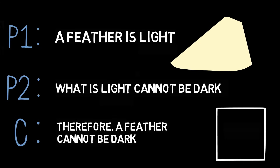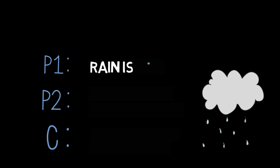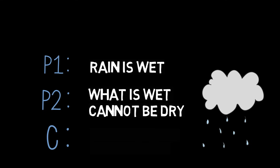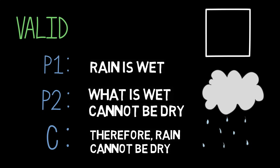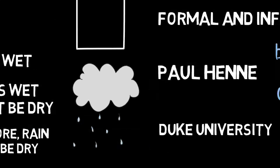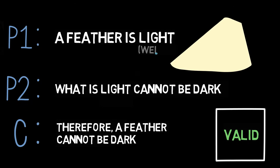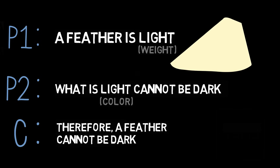The form may at first glance seem valid, that is, if we ignored the meaning of the content. Consider that we can use a seemingly similar argument form to make a valid argument. For instance — premise one: rain is wet. Premise two: what's wet cannot be dry. Conclusion: therefore, rain cannot be dry. Here we have a valid argument that seems to have a similar form as the fallacious one, but lacks defects in its content. But the content of our fallacious argument, given the two meanings of 'light' — lightweight and light color — yields problems. If we understand the meaning of the terms, we realize that the argument actually has an invalid argument form.